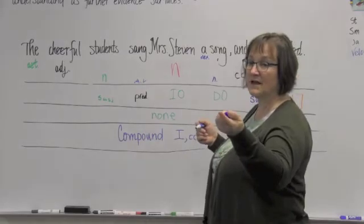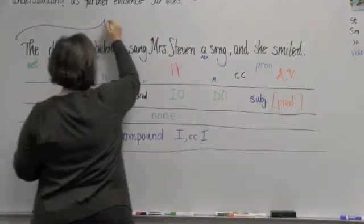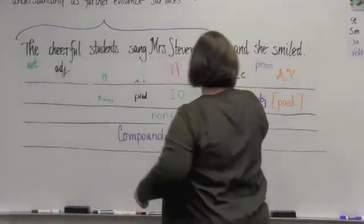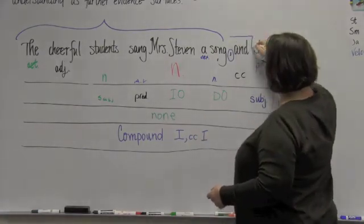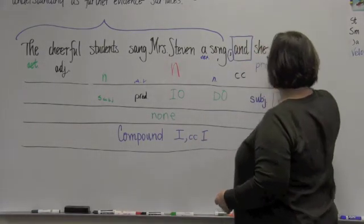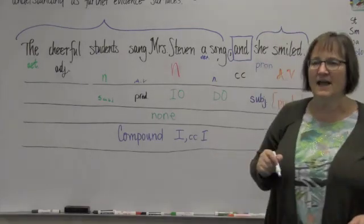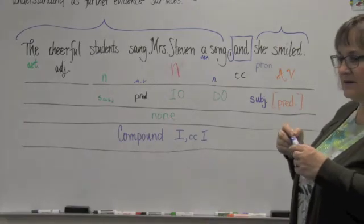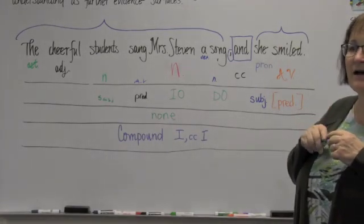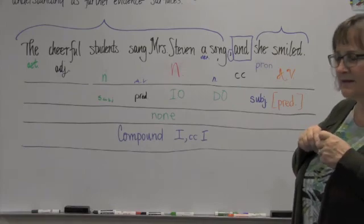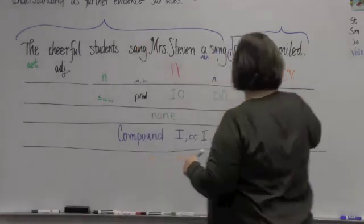So what does that mean? Braden, read our first clause again. You identified it beautifully. The cheerful students sang Ms. Steven a song. Boom. There's number one. And she smiled. There's our comma. Here's our coordinating conjunction. And here is our second clause. Can a clause be just two words? Can a sentence, independent sentence, be two words? Yes. Oh, yeah. We wrote a whole bunch of them one day, right? Yeah, absolutely can be two words. So this one's independent. This one's independent.